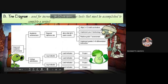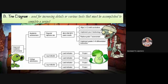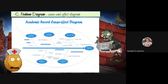Next is the tree diagram, used to increase the details of various tasks being accomplished or to complete in a project, and to achieve a specific objective. There are also online sites where you can create a tree diagram. The fishbone diagram, on the other hand, uses cause and effect — we use a lot of these elements in English. It is called the fishbone diagram because it structures the brain to branch out ideas, problems, and related concepts.